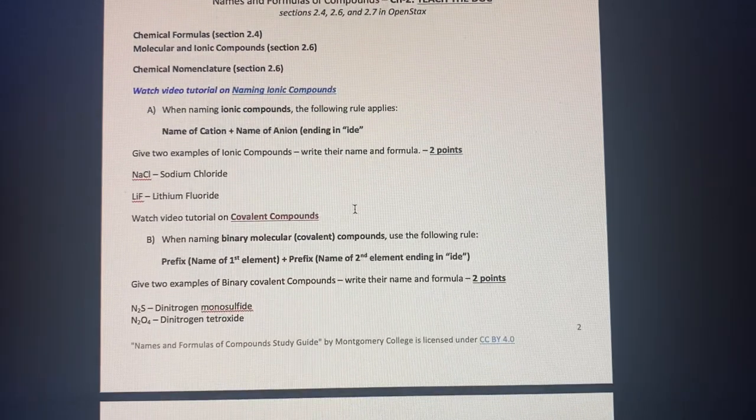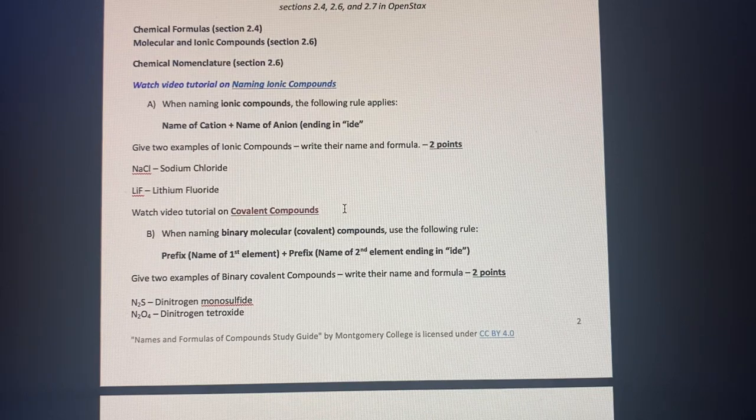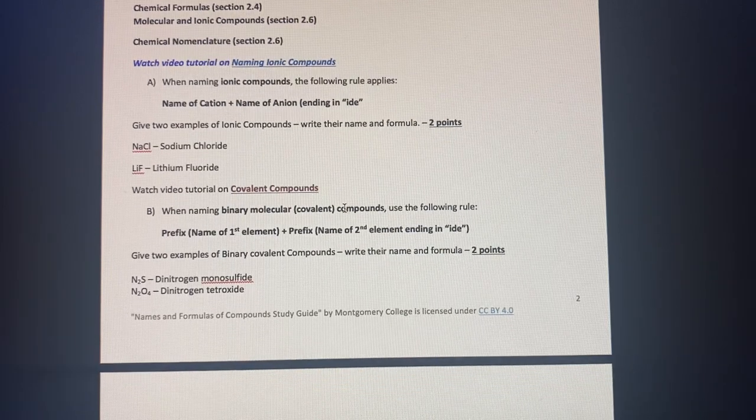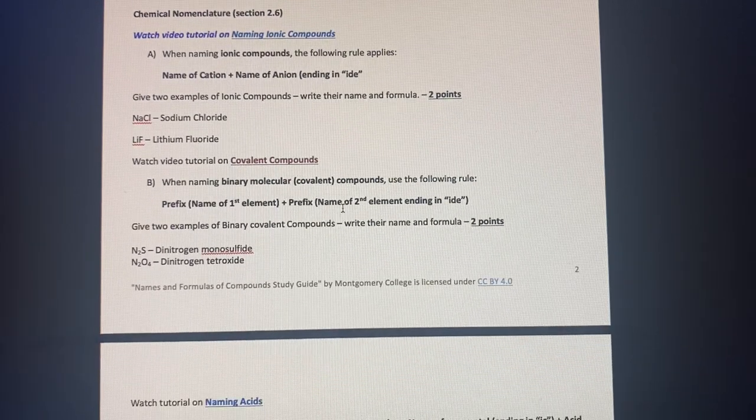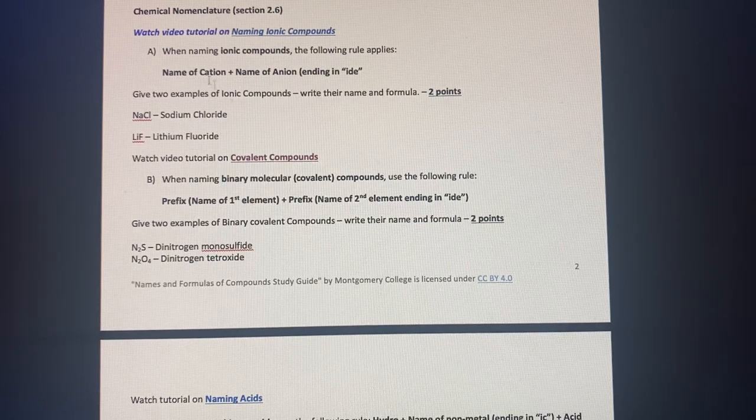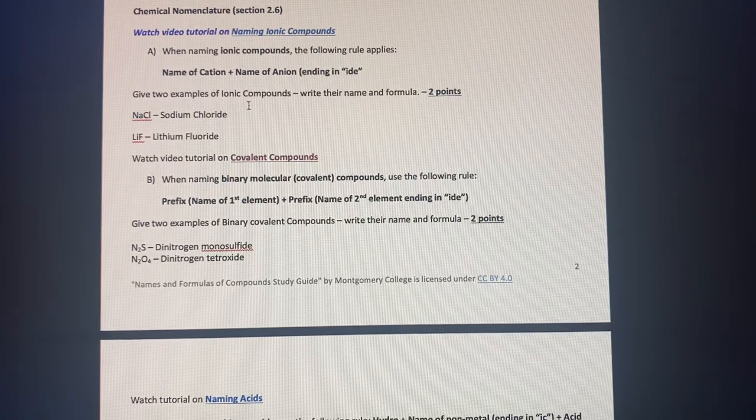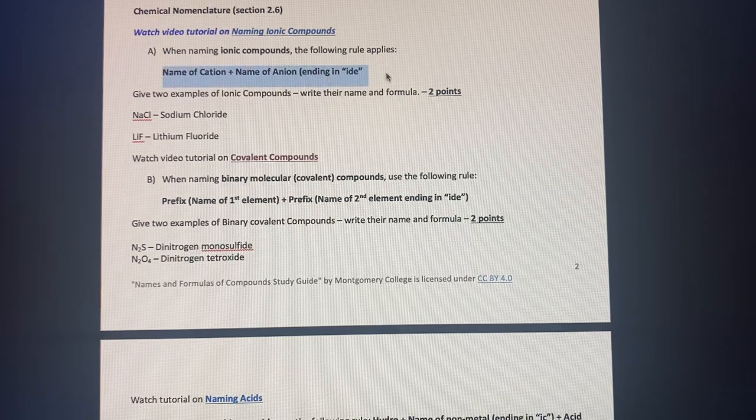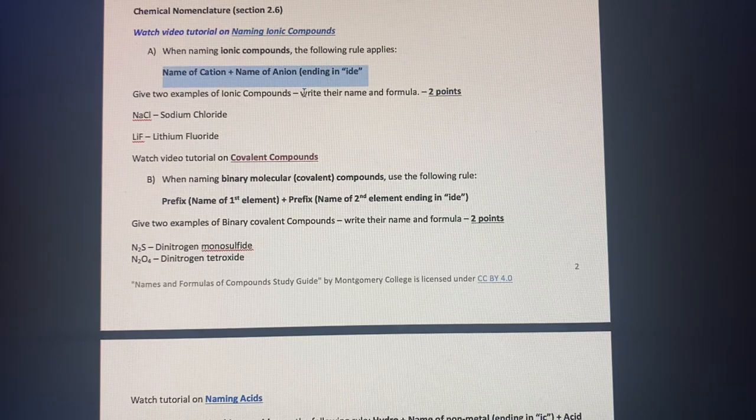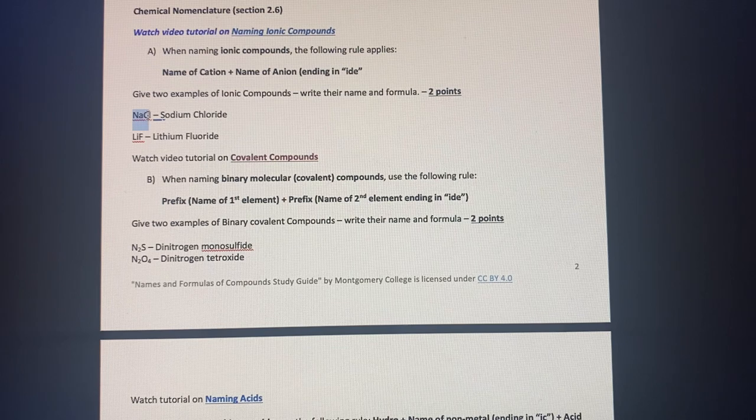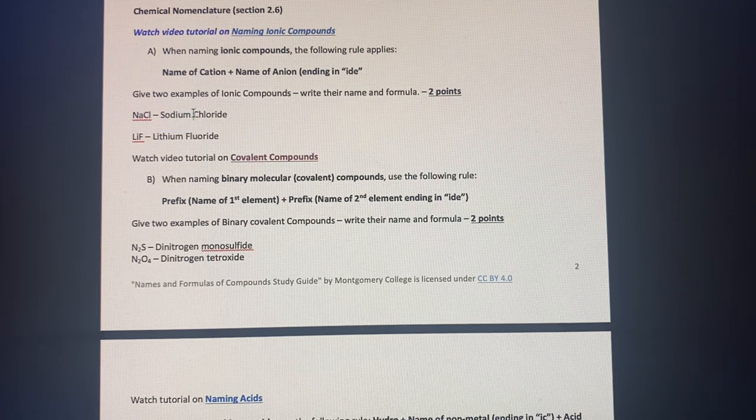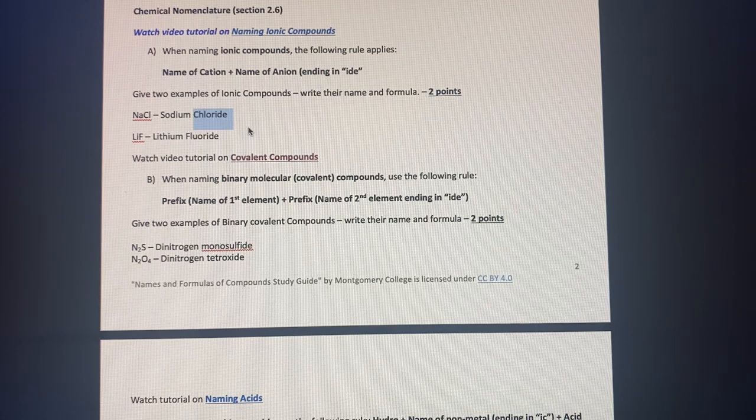Then go on to the next section, which is primarily dealing with nomenclature, and naming the various types of compounds and chemicals. So for the first one, we have ionic compounds, where we have the given formula of cation plus name of anion ending in IDE. And so for the first example, we have sodium and chlorine. So we take the sodium, and then we take chlorine, and we add the IDE. So it's sodium chloride.